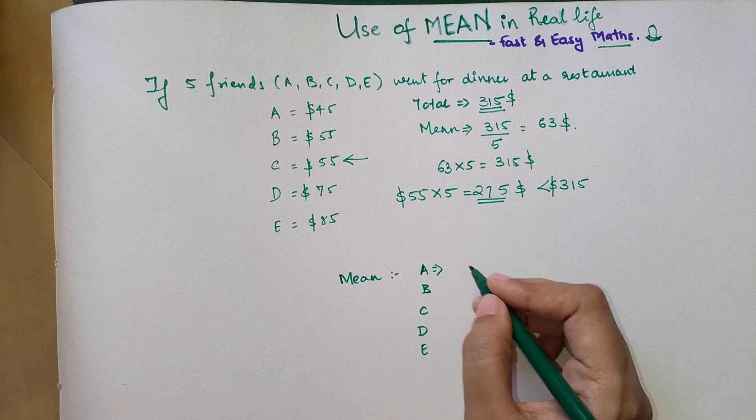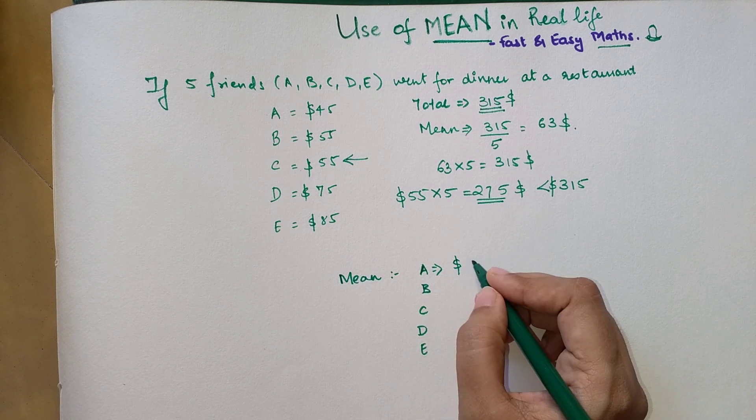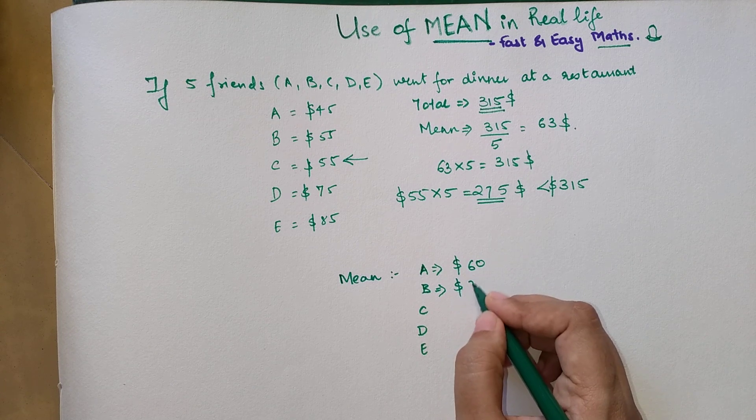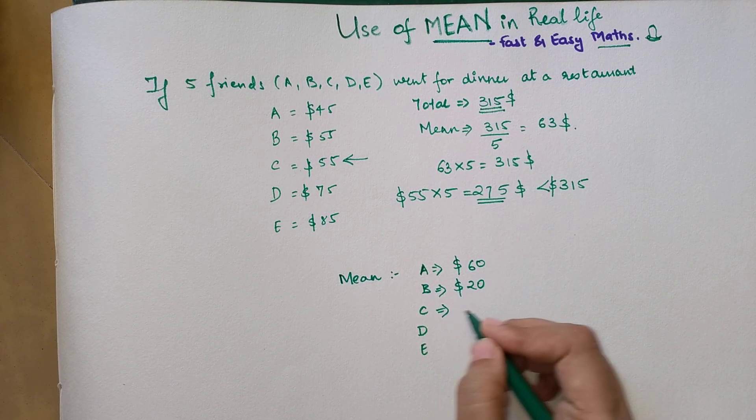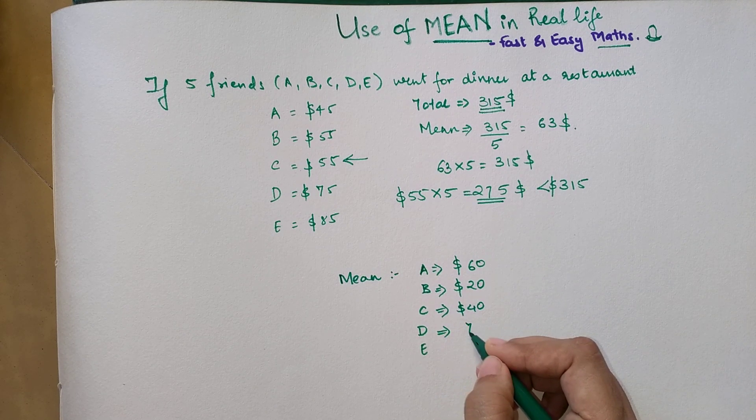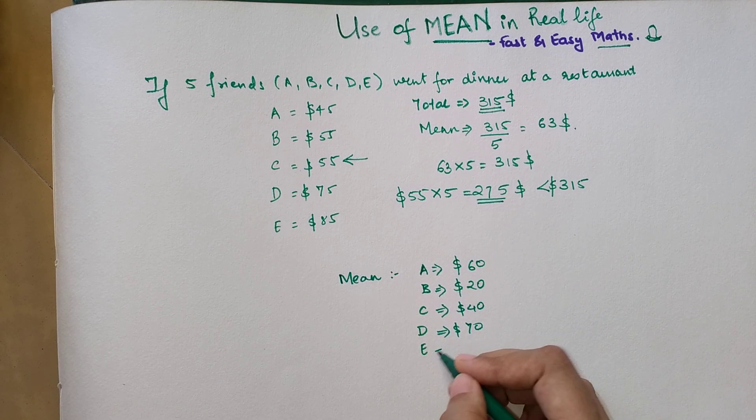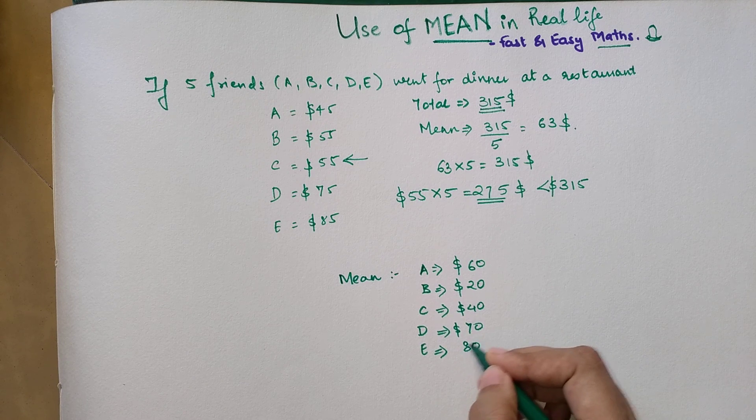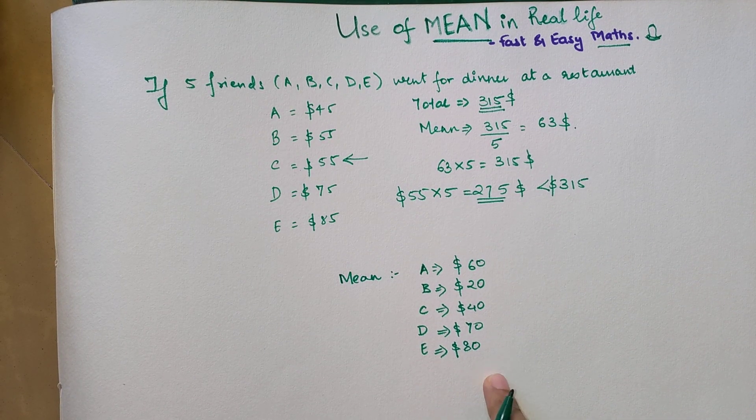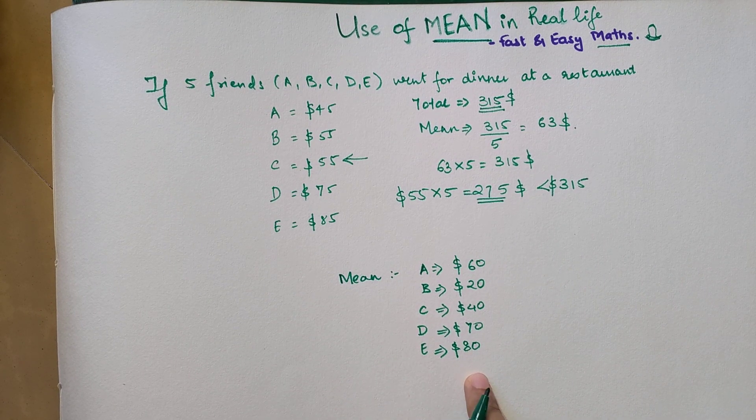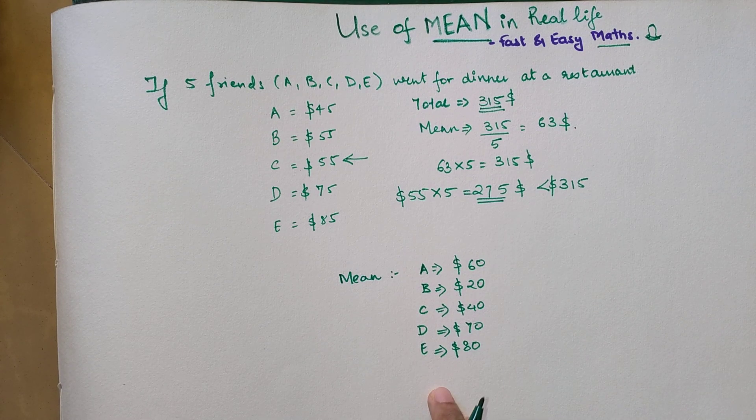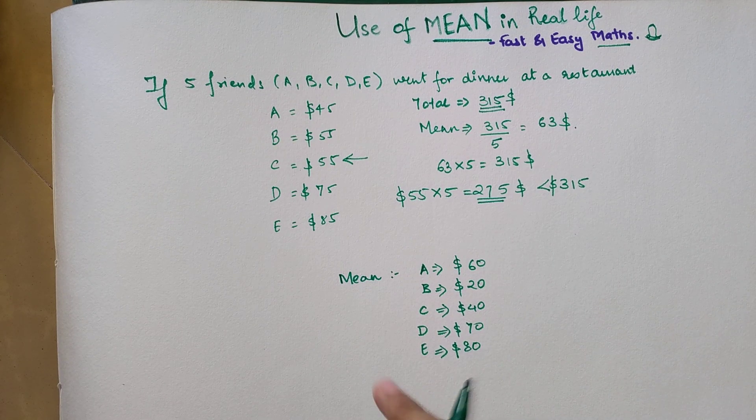Please tell me what will be the mean if these friends had the value of food eaten by A was $60, by B was $20, C $40, D $70, and E $80. Please go ahead and put that answer in the comment section of this video, and I'll let you know whether you did it right or wrong.